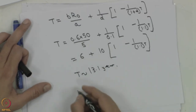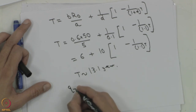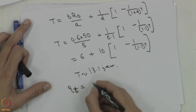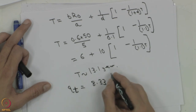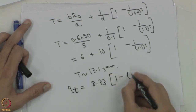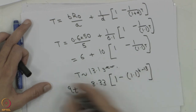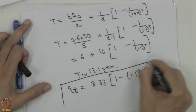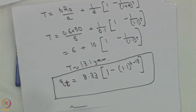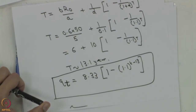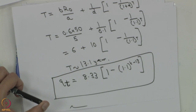When you substitute T equal to 13.1, what we get is Qt equals 8.33 times (1 minus 1.1 raised to (t minus 13)). If you look at the plot, extraction starts from here and closes down at about the 13th year, and the total area — the sum of all extraction — is 50 million tons, which equals R0.